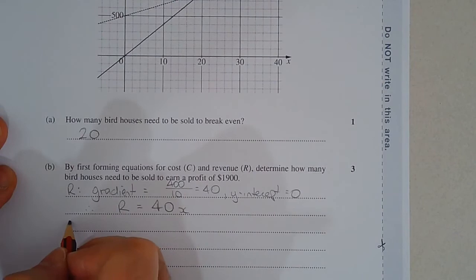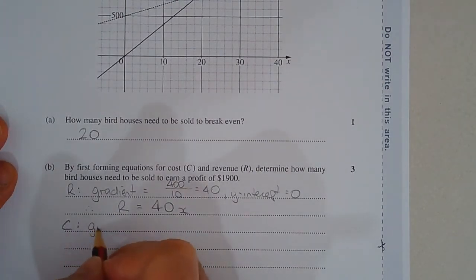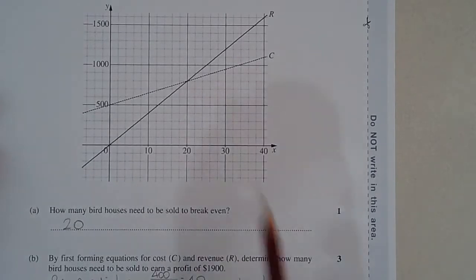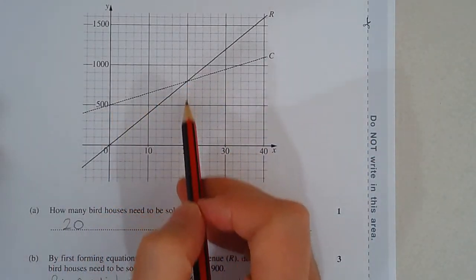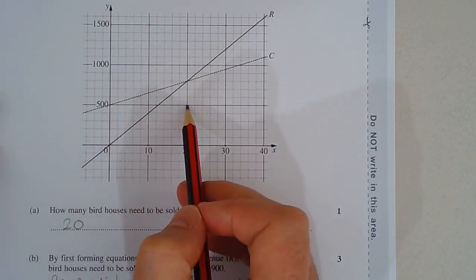Now let's have a look at the equation that represents the cost. And we're going to do the same thing again. Let's work out the gradient first. So the cost is the dotted line. Let's find a convenient right angle triangle. We might use this one here. You can see where I'm pointing here. So the run is 20.